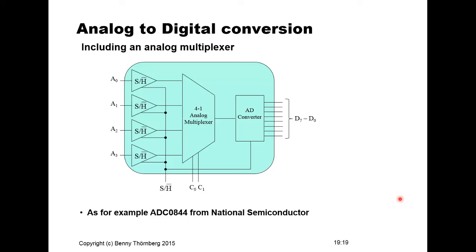This functionality can be extended further. A common configuration integrated with small microcontrollers that have analog inputs uses one A-to-D converter with multiple sample-and-hold amplifiers on each analog input channel and an analog multiplexer. Depending on the address fed to the multiplexer input, any one of the channels is sampled, so one single A-to-D converter can be used in combination with addressing one out of four input analog channels.